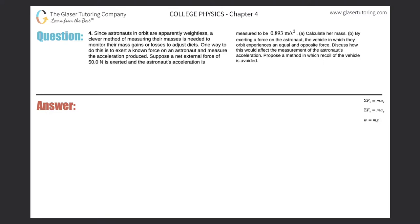Number 4. Since astronauts in orbit are apparently weightless, a clever method of measuring their masses is needed to monitor their mass gains or losses to adjust diets. One way to do this is to exert a known force on an astronaut and measure the acceleration produced. Suppose a net external force of 50 newtons is exerted and the astronaut's acceleration is measured to be 0.893 meters per second squared. Calculate her mass.